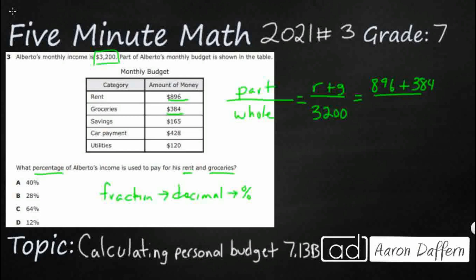All of that is going to be over 3,200. So let's add 896 and 384 together: that gives us 1,280. So our fraction is 1,280 over 3,200.